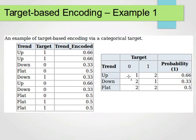For up, we have 1 for target 0 and 2 times for target 1. For down, 2 times for target 0, 1 time for target 1. Then we compute the probability for target 1. This 0.66 is 2 over 2 plus 1, which is 2 over 3. This one is 1 over 3. This one is 2 over 4, which is 0.5. And this one is 0.33, which is 1 over 1 plus 2, 1 over 3. This is how we replace it by its probability.